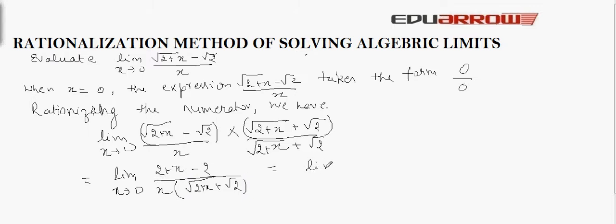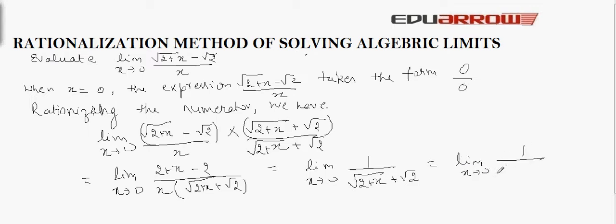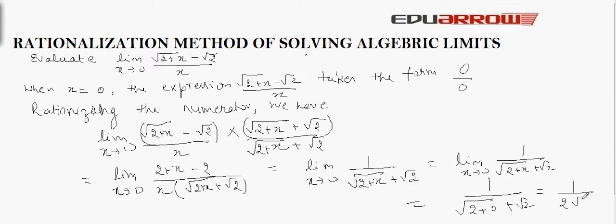So we get limit x tends to 0, and x is cancelled out by x. We get 1 / (√(2+x) + √2). Here we can apply the limit directly, which is equal to 1 / (√(2+0) + √2), which equals 1 / (2√2).